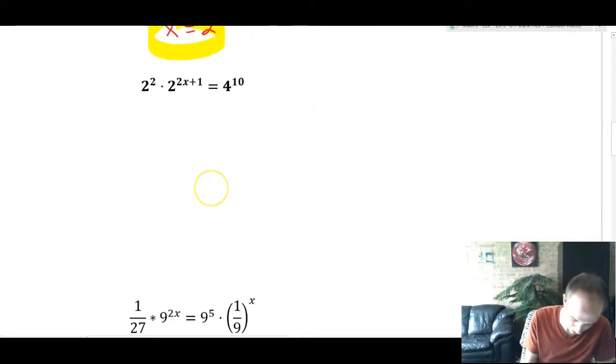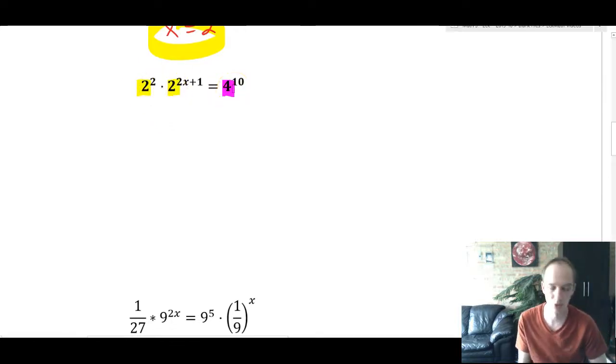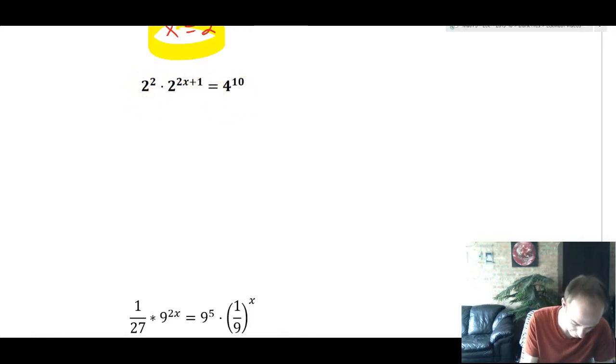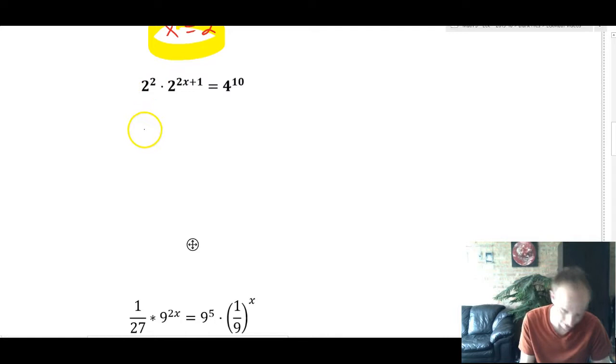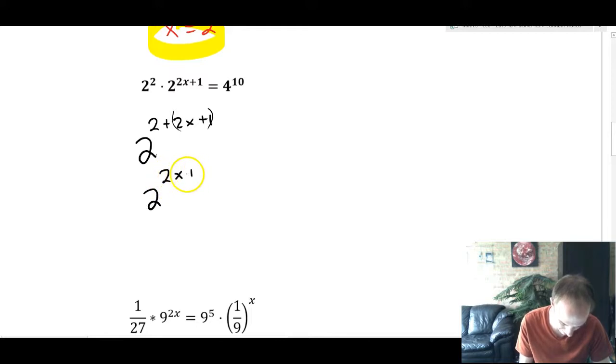So here we have something a little more complicated. One thing that makes it more complicated is that we have a 2, a 2, and a 4. So we're going to have to change some things around. Another thing that's more complicated is that we have two 2's right there. So we're going to have to bring them together. We'll do the left side first. So 2^2 and 2^(2x+1). 2^2 is 4, but we're not going to write it as 4. Instead, we're going to use the exponent rules that says when you multiply the same base, we add the exponents. This is going to be the same as 2^(2 + 2x + 1).